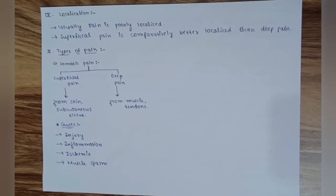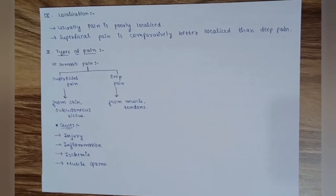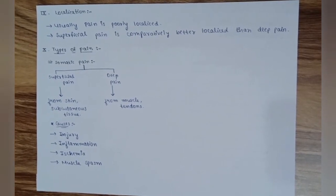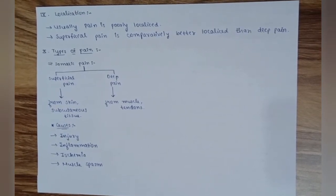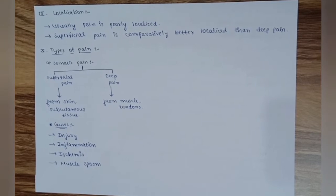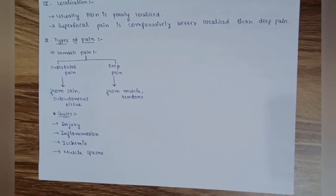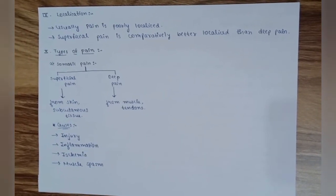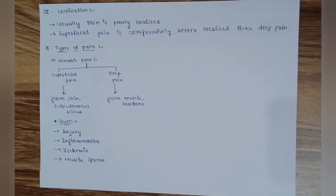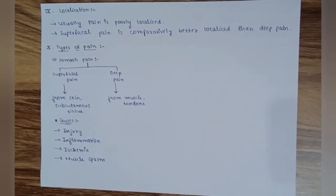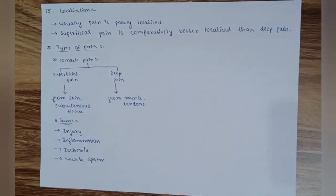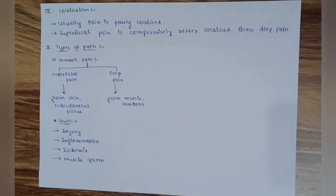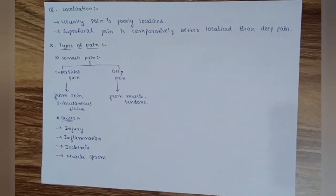Pain is usually poorly localized; superficial pain is better localized than deep pain. Types of pain: somatic pain is divided into superficial pain (from skin and cutaneous tissue) and deep pain (from muscles and tendons). Causes for somatic pain include injury, inflammation (with effects of bradykinin and prostaglandins), ischemia, and muscle fatigue from overuse.